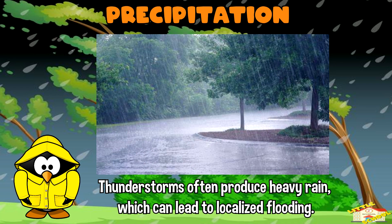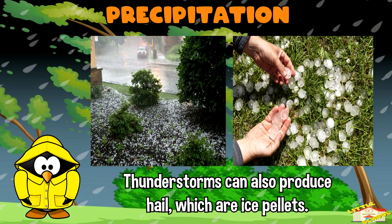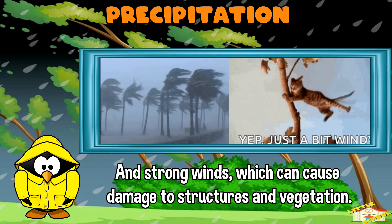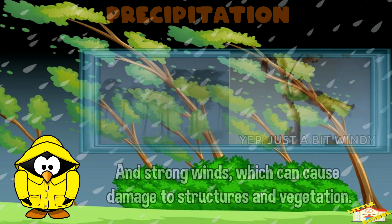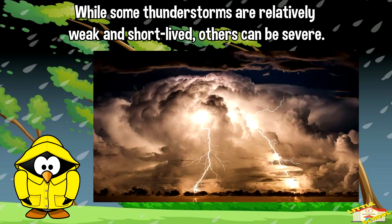Thunderstorms often produce heavy rain, which can lead to localized flooding. In addition to rain, thunderstorms can also produce hail, which are ice pellets, and strong winds, which can cause damage to structures and vegetation. Thunderstorms can vary in intensity, size, and duration — while some are relatively weak and short-lived, others can be severe, producing intense lightning, heavy rain, hail, and strong winds.